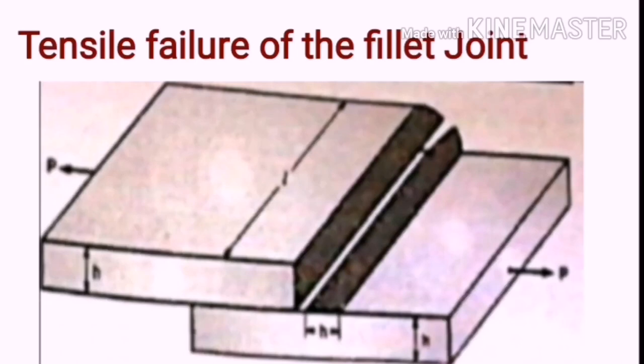The figure shows the tensile failure of the fillet joint. From the diagram given, you can see that the applied load is in the direction perpendicular to the axis of the welds. Thereby, the weld will fail in tensile nature as depicted in the given diagram.